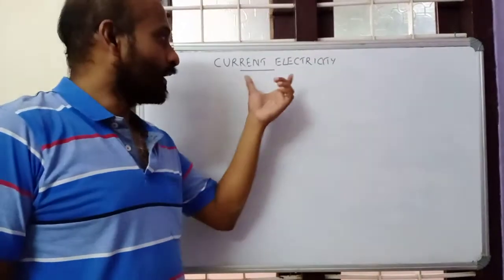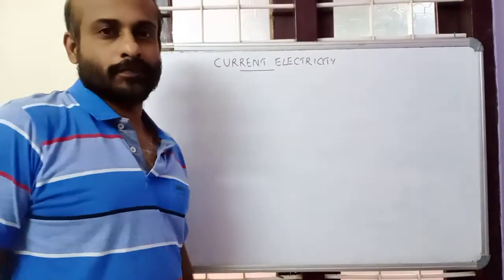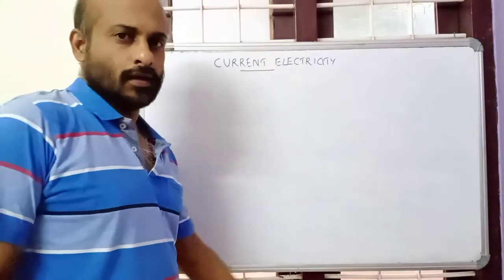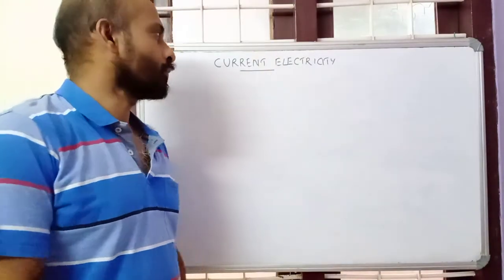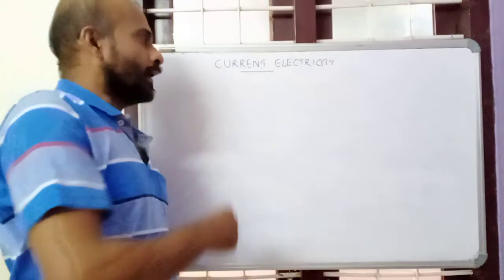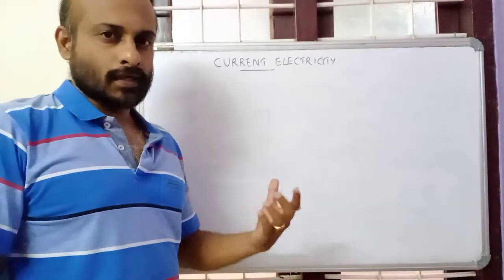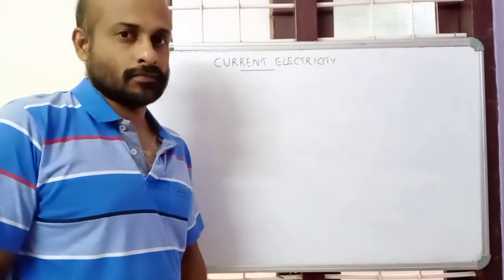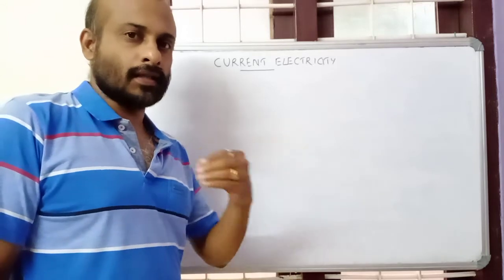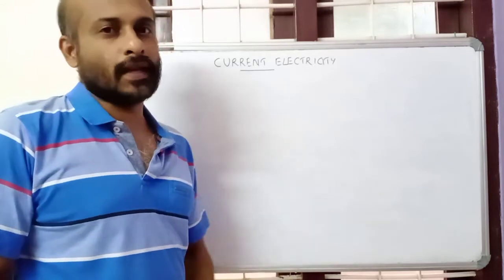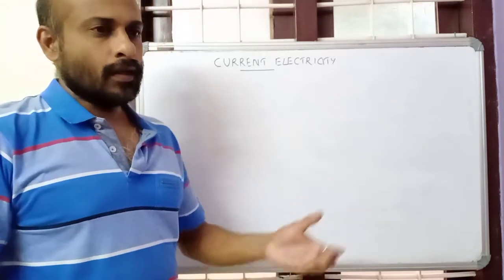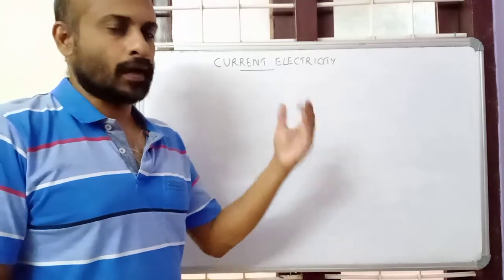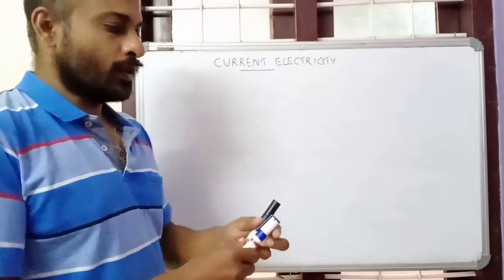Today we are going to see current electricity — it's a new chapter for Plus Two physics. In current electricity, we start with the flow of electric charges through a conductor. We will consider electrons moving in a conductor. In 10th standard, you have learned the basics of current electricity.